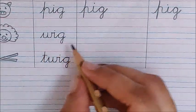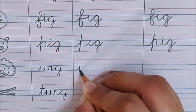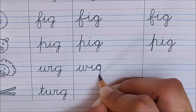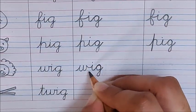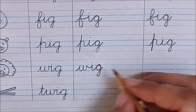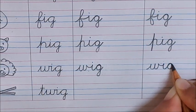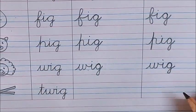Now next word is wig. W, I, G. Wig. See the smiley is not touching the lower blue line. One more time. W, I, G. Wig.